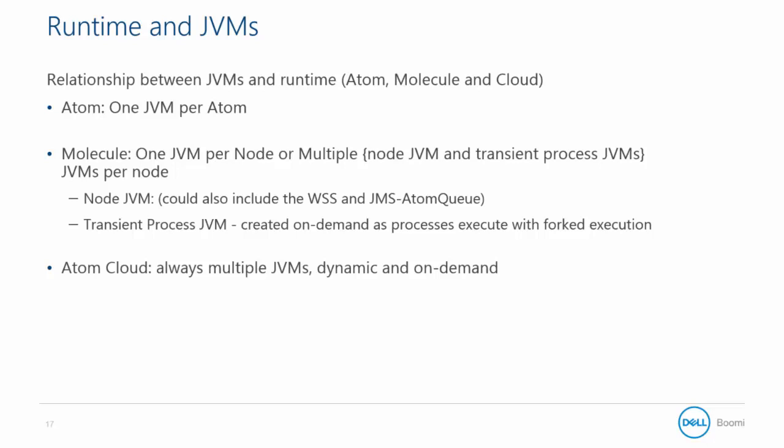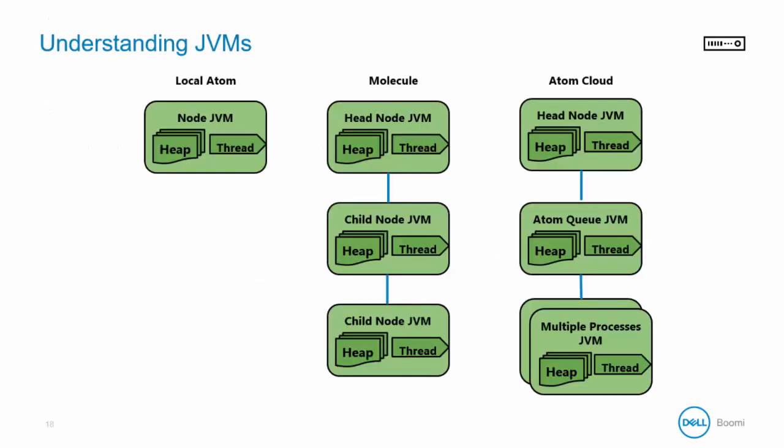The atom cloud is the most dynamic of the three. It always has multiple JVMs and will scale dynamically to meet the need — it spins up a JVM for each process request. This may help illustrate the architecture: an atom has a single JVM, while a molecule has a head node and can have multiple child nodes as well.